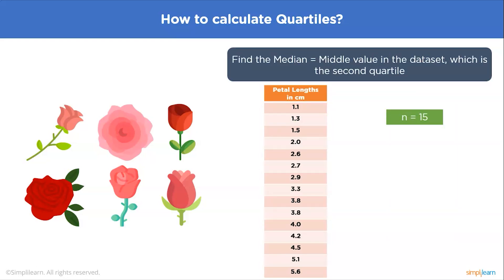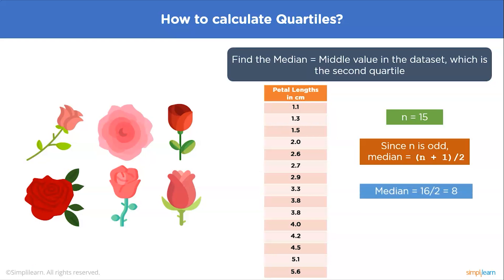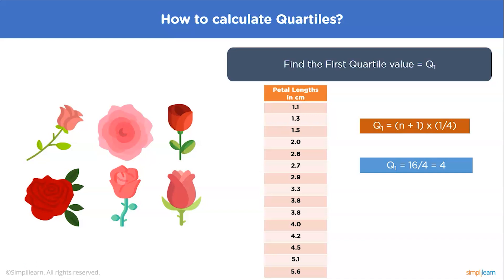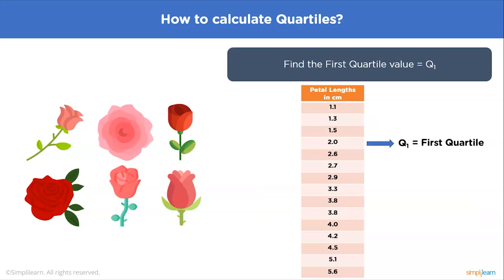To find the median, we have two formulas: one when n is odd and one when n is even. Since n = 15 here, which is odd, we calculate the median position as (n+1)/2 = 16/2 = 8. So Q2 is the 8th observation, which equals 3.3 in the data set. To find Q1, we use the formula Q1 = (n+1) × (1/4). Since n = 15, we get 16/4 = 4, so Q1 is the 4th observation.